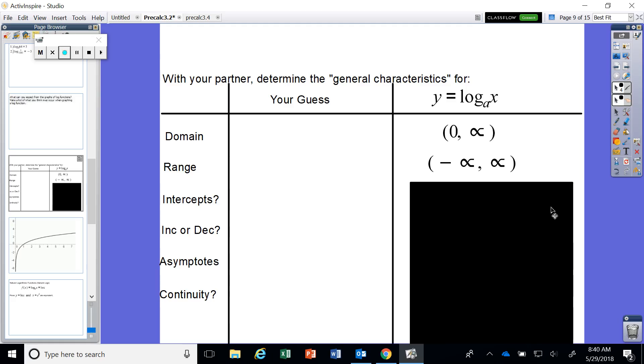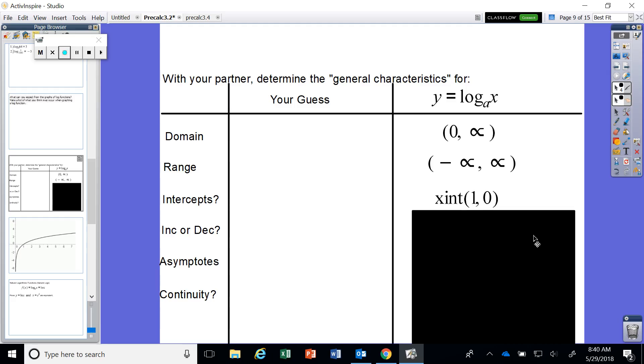Well, what about the intercepts? Well, once again, think about it. We didn't have any x-intercepts for our exponential function. We didn't have any because that was our asymptote, right? So for our inverse, where do you think we're not going to have this time? You guessed it. We're not going to have any y-intercepts. So instead, we have the complete opposite on the x-intercept at one, zero.